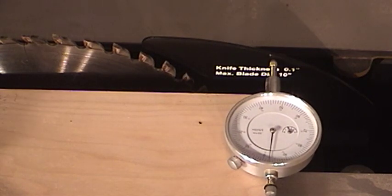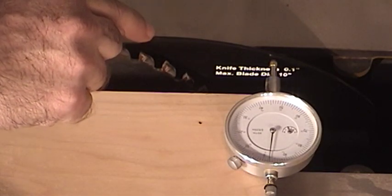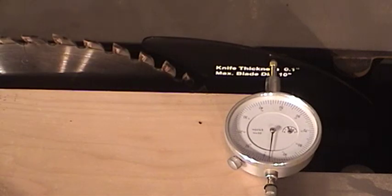And as I slide the dial indicator to the rear of the riving knife it's only off by two thou in this direction. So only a difference of one thou from the front of the riving knife to the back. So that's a pretty darn good alignment.